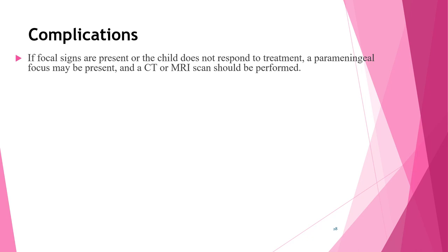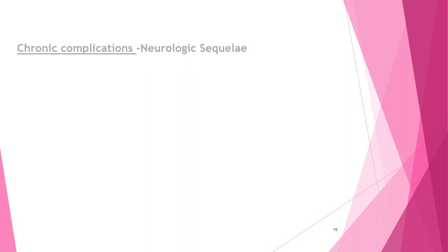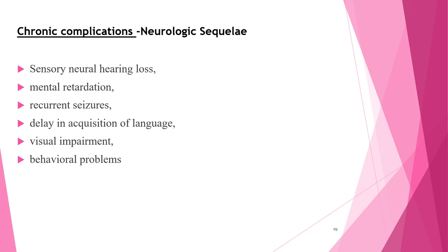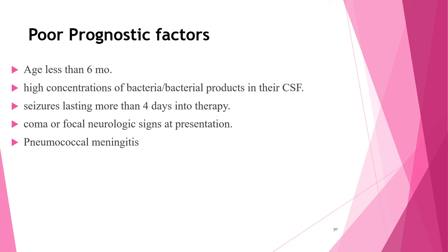If focal signs are present or the child does not respond to treatment, a parameningeal focus may be present and CT or MRI should be performed. Complications of bacterial meningitis are classified as acute or long-term. Acute complications include seizures, increased ICP, cerebral edema, ischemia and thrombosis, cranial nerve palsy, cerebral herniation, subdural effusion, disseminated illness such as septic arthritis, pericarditis, and SIADH. Long-term neurologic sequelae include sensorineural hearing loss, intellectual disability, recurrent seizures, delayed language acquisition, visual impairment, and behavioral problems.